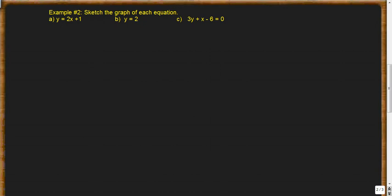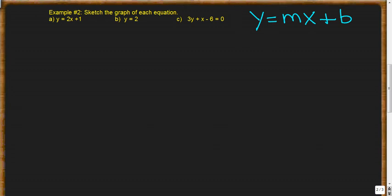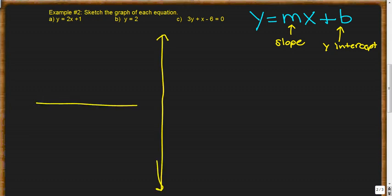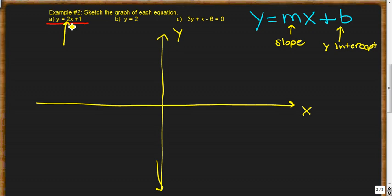Example 2 asks us to sketch the graph of each equation, using slope-intercept form. Remember, slope-intercept form looks like y = mx + b, where m is our slope and b is our y-intercept. The first equation is y = 2x + 1. We can see that our slope is 2, because that's what's attached to x, and our y-intercept is 1.